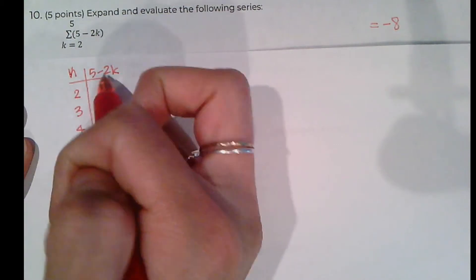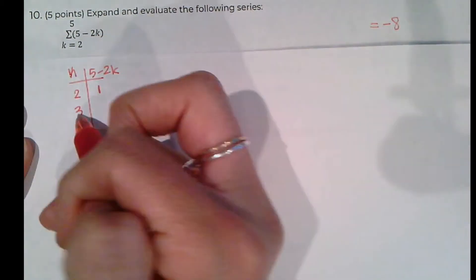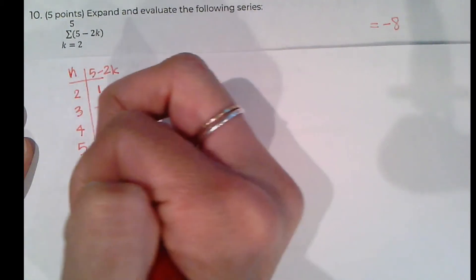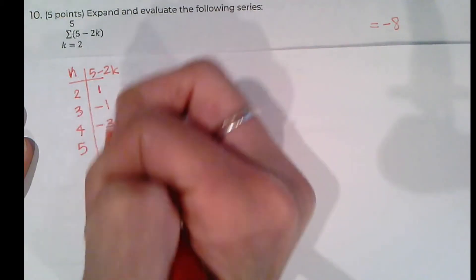So I plug in this, it's going to be 5 minus 4. Plug in 3, it's going to be 5 minus 6. 4 is going to be 5 minus 8, and 5 it's going to be 5 minus 10.